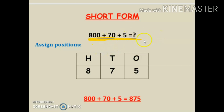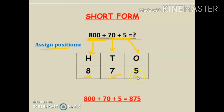First, you have to assign the positions — ones, tens, and hundreds — and form this table. Eight hundred comes under hundreds, so I write eight. Seventy comes under tens, so I write seven. Five comes under ones, so I write five. So the number is eight hundred seventy five. Short form of eight hundred plus seventy plus five is eight seventy five.